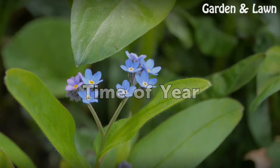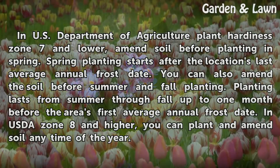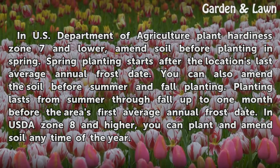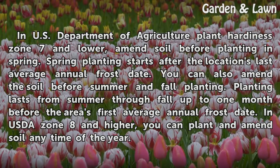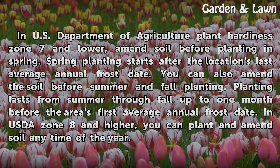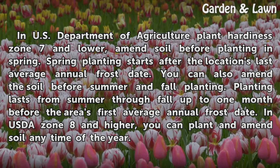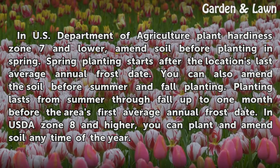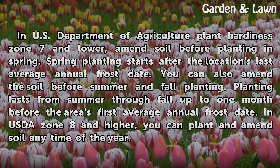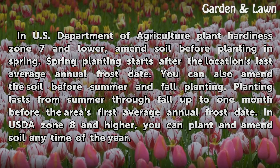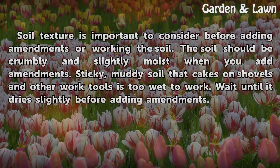In USDA plant hardiness zone 7 and lower, amend soil before planting in spring. Spring planting starts after the location's last average annual frost date. You can also amend the soil before summer and fall planting — up to one month before the area's first average annual frost date. In USDA zone 8 and higher, you can plant and amend soil any time of the year.